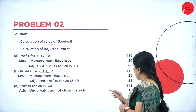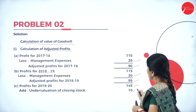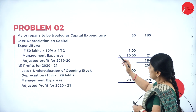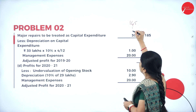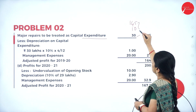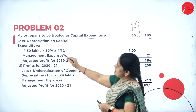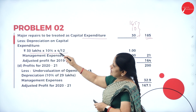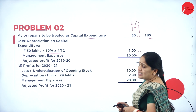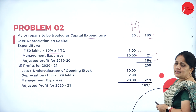For 2019-20, the profit is given as 145. Closing stock has been undervalued, so I add back 10 lakhs. Major repairs are to be treated as capital expenditure, so I add back 30 lakhs — totalling 185. Then I deduct depreciation: 30 lakhs × 10% × 4/12 = 1 lakh. Management expenses are 20 lakhs, so total deductions are 21 lakhs. The adjusted profit for 2019-20 is 164 lakhs.